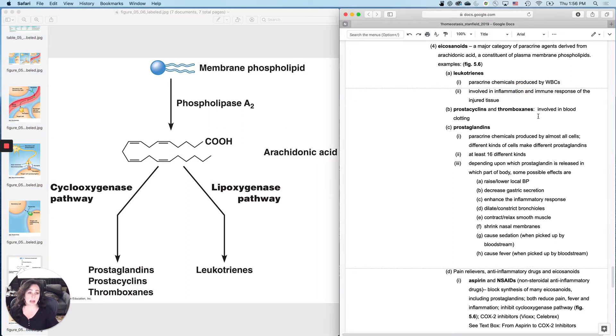They can enhance the inflammatory response that was also caused by leukotriene. So those two kind of work together. Again, inflammation, first step of healing, so kind of good, potentially painful, kind of uncomfortable. And also, if it continues to go on, inflammation itself can cause damage. And then dilate or constrict the bronchioles, depending on whether it was something that made you want to get more air in or less air in. They can contract or relax the smooth muscle in the digestive tract and other places. They can shrink your nasal membranes. And then importantly, if they are released in large quantities, they can cause sedation and fever. These are second tier responses.